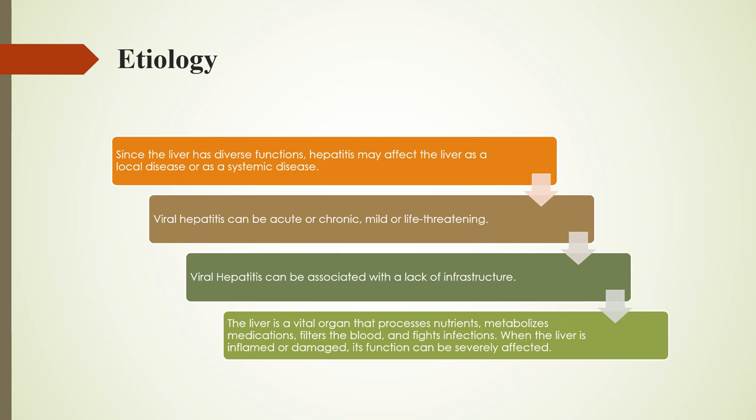For example, locally it will affect the bile production, which will affect the systemic digestive system — when we eat fat, that will be affected. Also, the viral hepatitis can be acute or chronic, and it can be mild or severe.